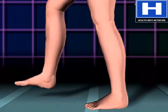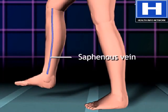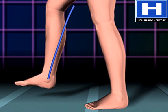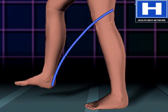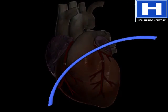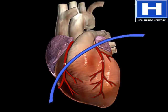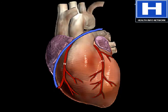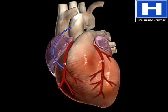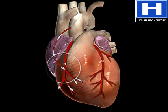Next, a portion of the saphenous vein, which is very large, is harvested from the inside of the leg. Pieces of this large vein are used to bypass the blocked coronary arteries, which are arteries that supply blood to the heart.